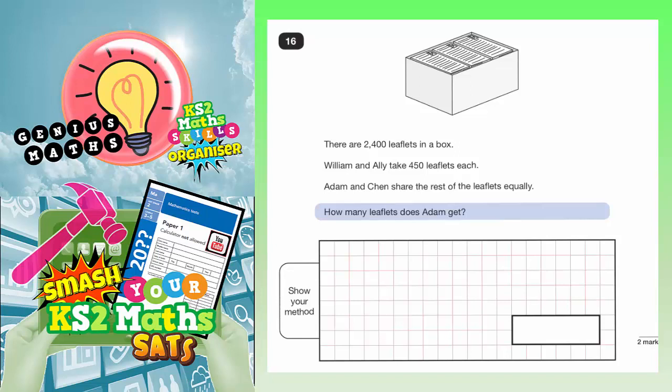Question 16. There are 2,400 leaflets in a box. William and Ali take 450 leaflets each. Adam and Chen share the rest of the leaflets equally. How many leaflets does Adam get?